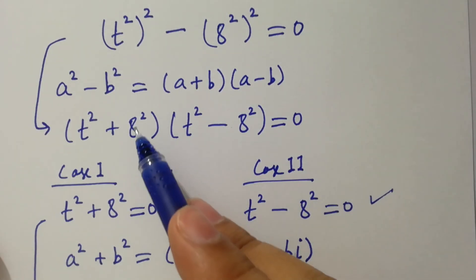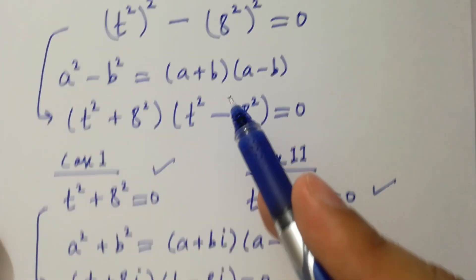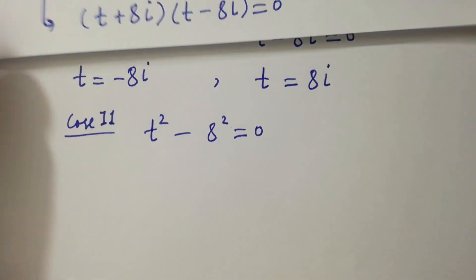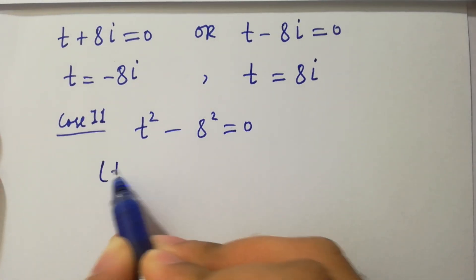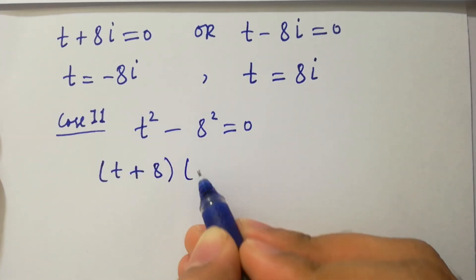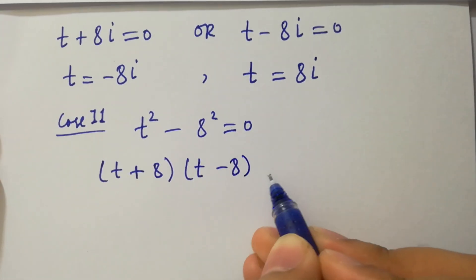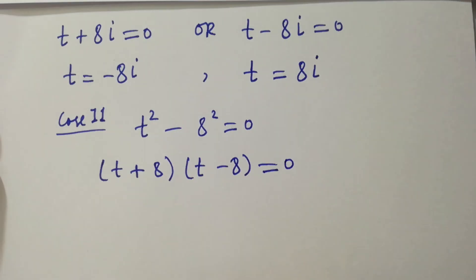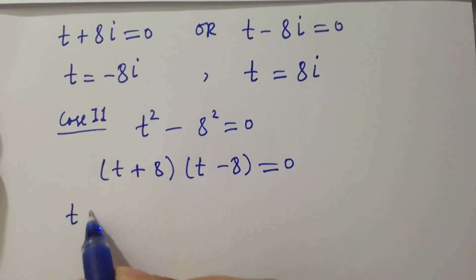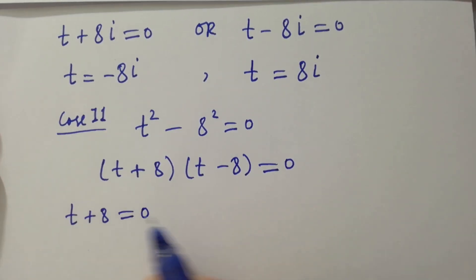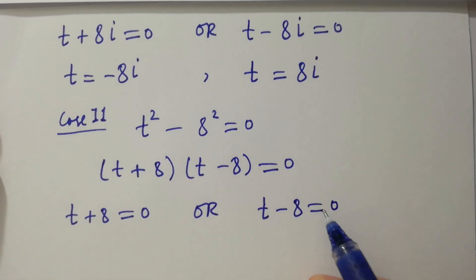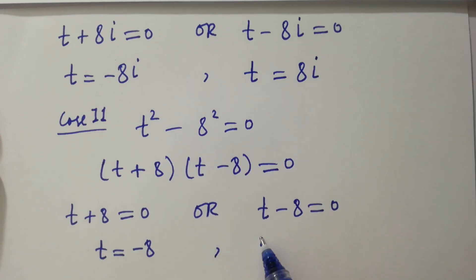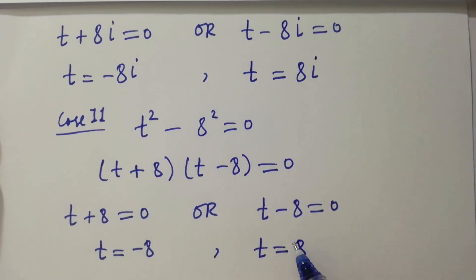Apply the formula of a squared minus b squared equals a plus b times a minus b. We get t plus 8 times t minus 8 equal to 0. Either t plus 8 equals 0 or t minus 8 equals 0, giving t equal to minus 8 and t equal to plus 8.